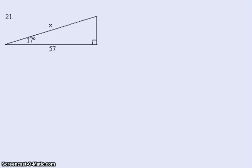And then lastly, problem 21. It looks like we're going to go from the perspective of 17, where 57 would be my adjacent, and X would be my hypotenuse. If you look at SOHCAHTOA, you can see cosine is adjacent over hypotenuse, so it's important you pick the correct trig function.